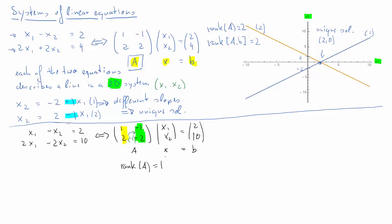What about the rank of [A|B] — the matrix consisting of columns A and a third column equal to vector B? Looking at vector B, the second element is 5 times the first element (10 is 5 times 2), whereas in the other columns the second element is 2 times the first. So B is new information — it is a new independent vector — and the rank of [A|B] is 2.